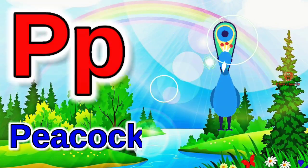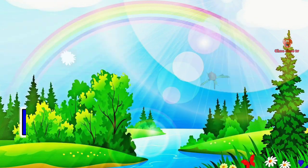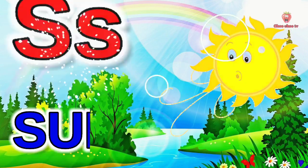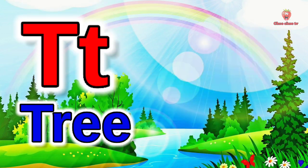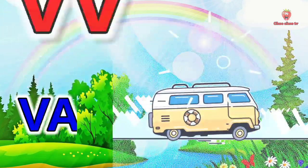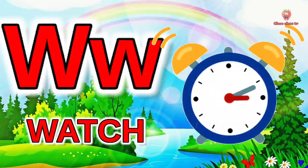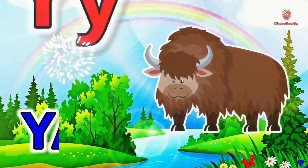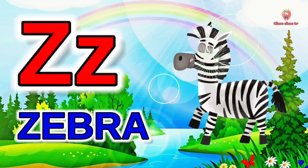P for pickup, Q for queen, R for rose, S for sun, T for tree, U for uncle, V for van, W for watch, X for x-ray, Y for yak, Z for zebra.